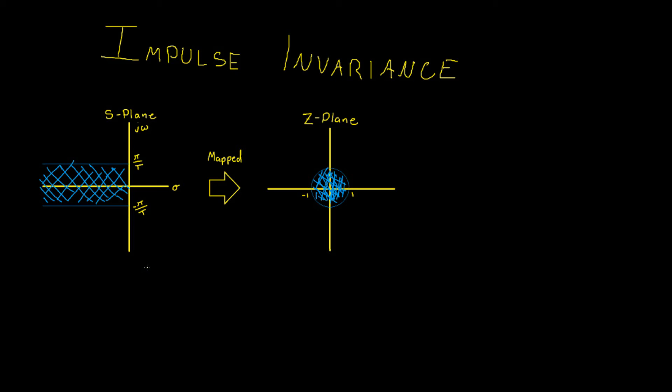The impulse invariance method maps the left half plane bounded by the pi on T and negative pi on T into the unit circle of the z-plane. Therefore, if you have a stable analog filter, it will result in a stable digital filter. Remember that a stable digital filter simply has all of its poles within the unit circle of the z-plane.